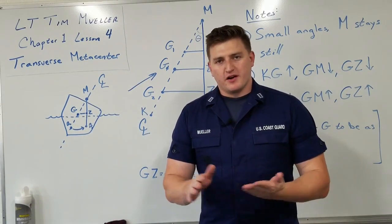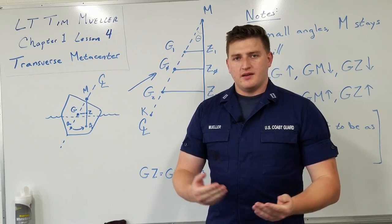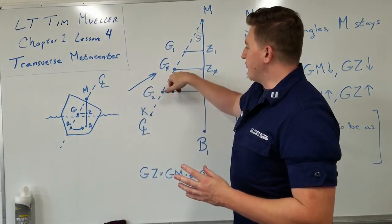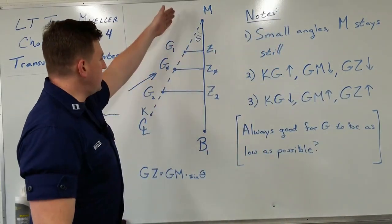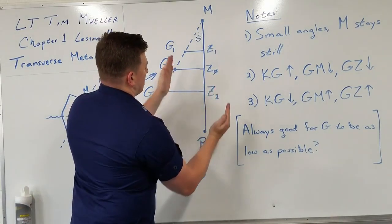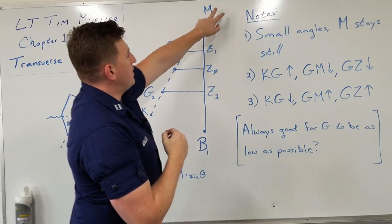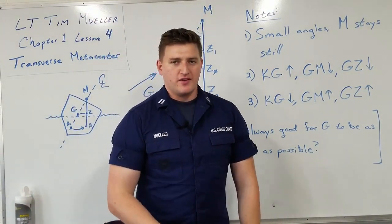In the next lesson, we're going to be talking about positive stability, negative stability, neutral stability, and different conditions that we have with G. As you probably already thought, G is always a force acting down, and B is always acting up. So we always have this moment trying to go this way. What if G goes higher than M? Think about that for a second, and then join me on the next video.